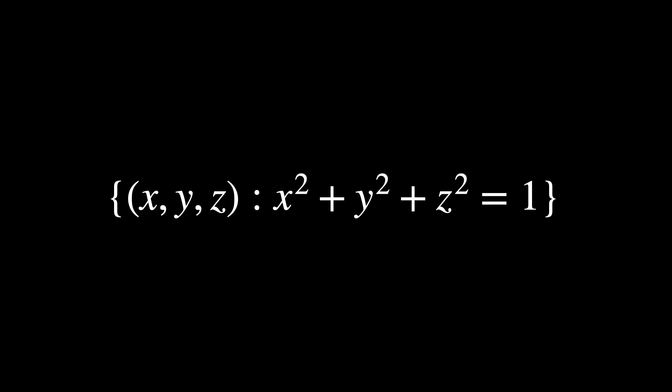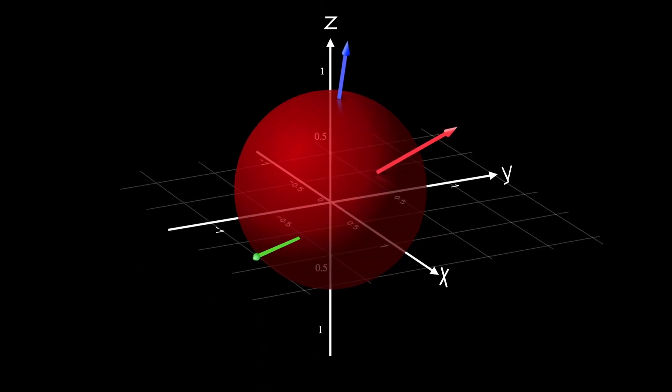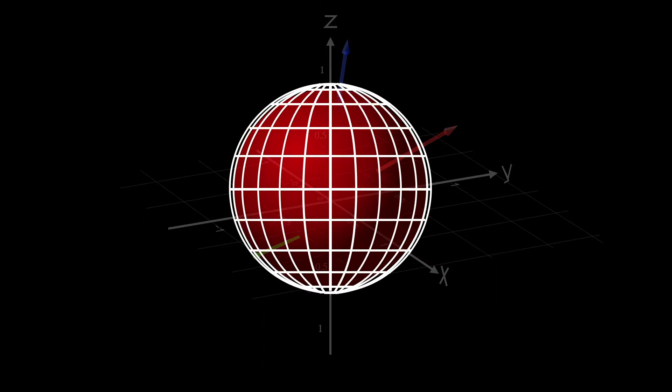But this isn't very fair. The surface of a sphere, when considered as an entity in itself, does not occupy any volume. Surely, there should be a way to describe the surface of the sphere in a two-dimensional way.